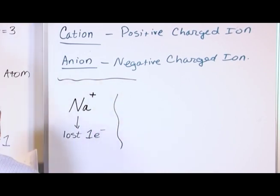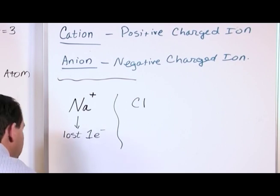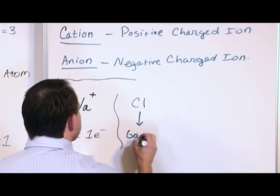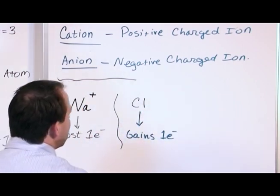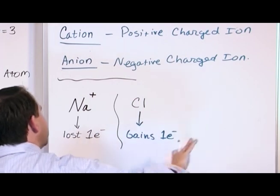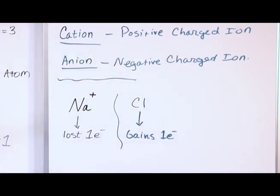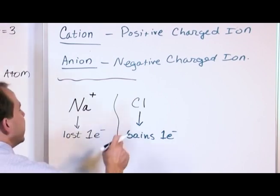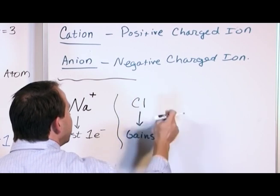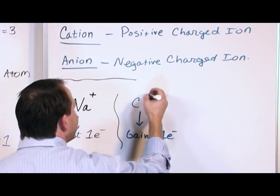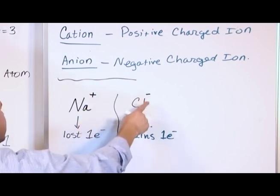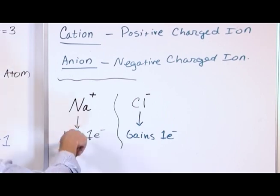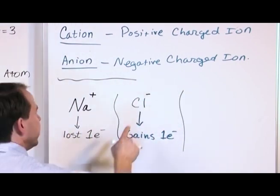What if a chlorine atom gains one electron? We write this as the chloride ion. The elements on the right-hand side get an '-ide' ending, so it's a chloride ion. If chlorine gains an electron, it's going to be negative, so we put a negative sign in the upper right — Cl⁻. It's only gained one electron, so we don't have to write the number one; the negative sign implies a charge of one, just like the positive does for sodium.